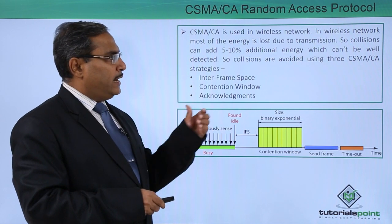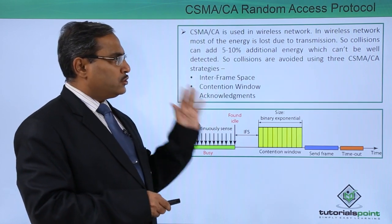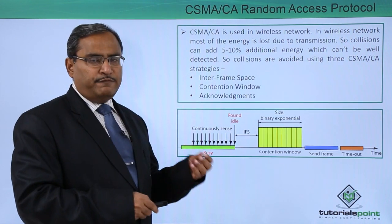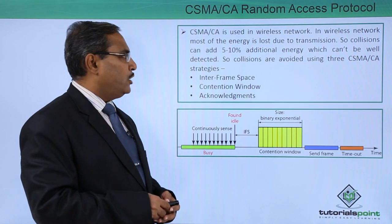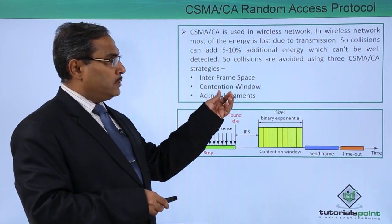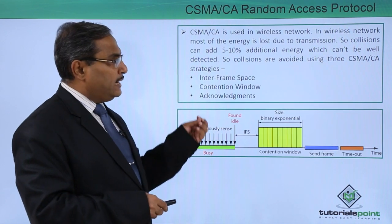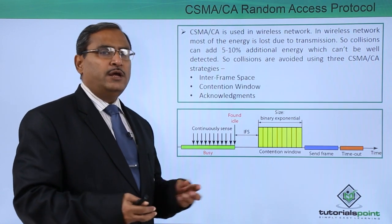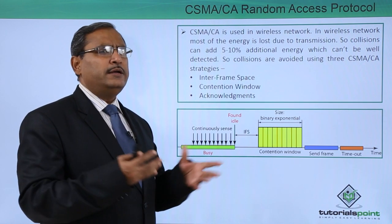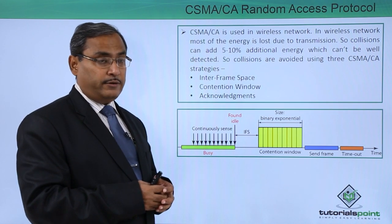CSMA/CA is used for wireless networks. In wireless networks, most of the energy is lost due to transmission, and so a collision can add only 5 to 10 percent additional energy, which cannot be well detected. The point is very vital — in wireless networks most of the energy is spent transmitting data, and if any collision or overlapping of signals occurs, it will add hardly 5 to 10 percent of additional energy, which is very difficult to recognize.